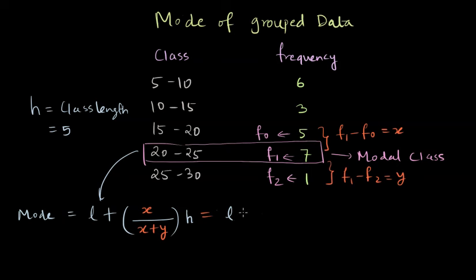If we want to simplify this, we can write it as L plus F1 minus F0 in the numerator. So F1 minus F0 plus F1 minus F2 times H, which is nothing but L plus inside the bracket again, F1 minus F0 divided by two F1 minus F0 minus F2 times H.